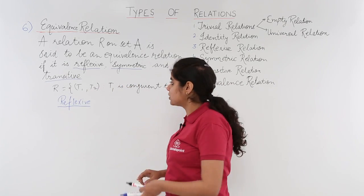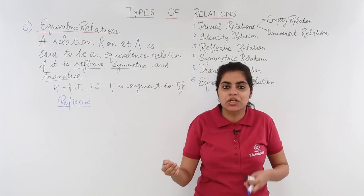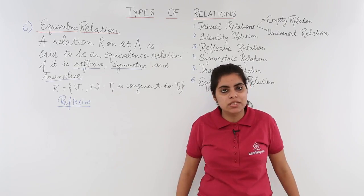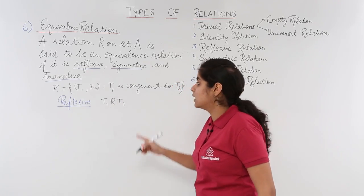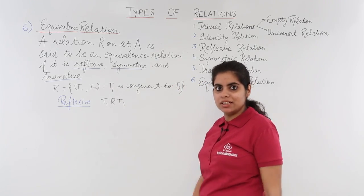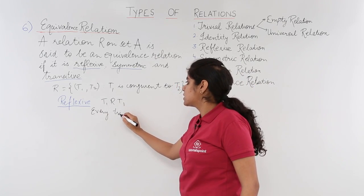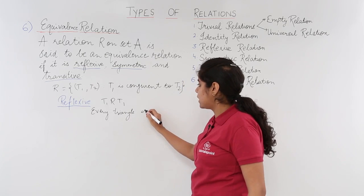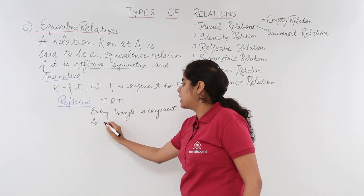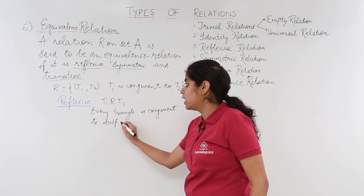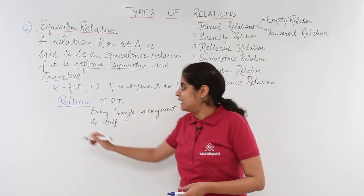Reflexive relation is the one in which all elements of a set are related to themselves — each element should be related to itself. Now let's check whether T1 is related to T1. Is T1 congruent to T1? Yes, T1 is congruent to T1, since every triangle is congruent to itself. Hence congruency for two triangles would be a reflexive relation.